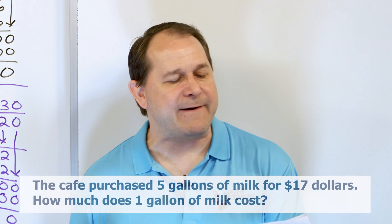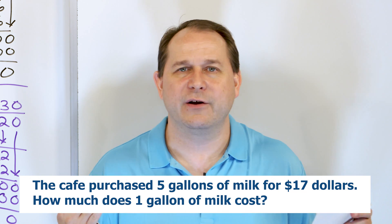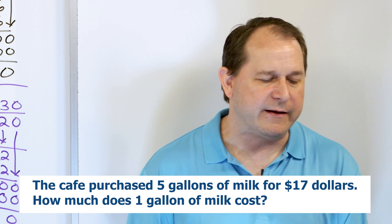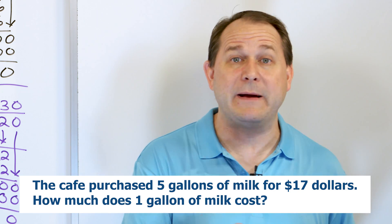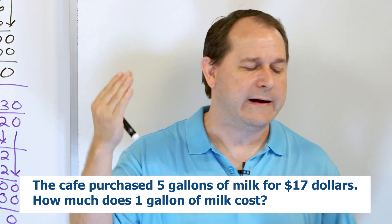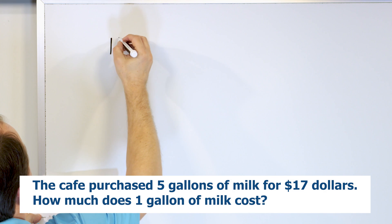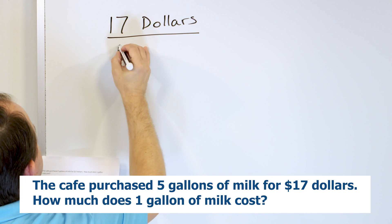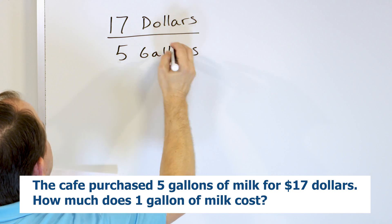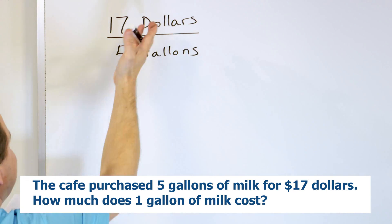All right. Problem two. The cafe purchased five gallons of milk for $17. How much does one gallon of milk cost? This would be a real practical problem. You have a, you're running a business. You're purchasing five gallons at a time to run your business. It costs you $17, might be a good idea to know how much you're spending for every one gallon of milk. That is a unit rate dollars per gallon. That's what you're actually trying to do. So it tells you that you're spending $17 per five gallons.